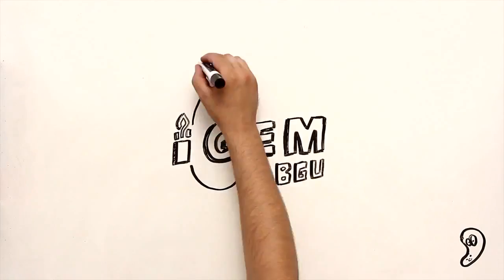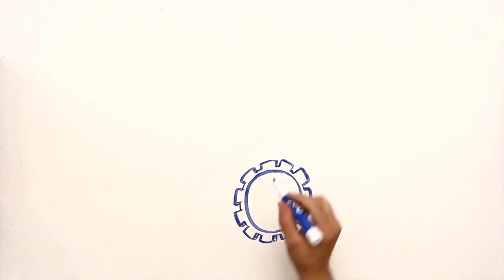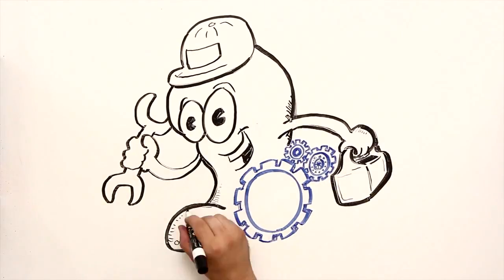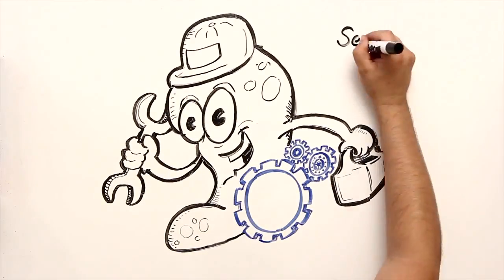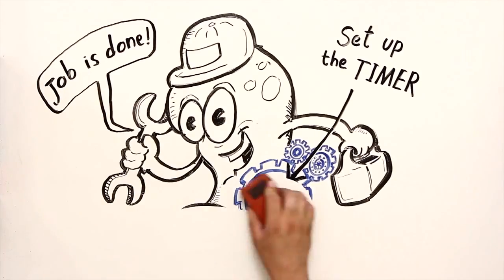This is where we come in, the iGEM team of Ben Gurion University. We are creating a self-destruct mechanism that can be added to any existing biological product to make sure that it stays under control. In other words, you set up the timer and when the time is up, the bacteria disappears without a trace.